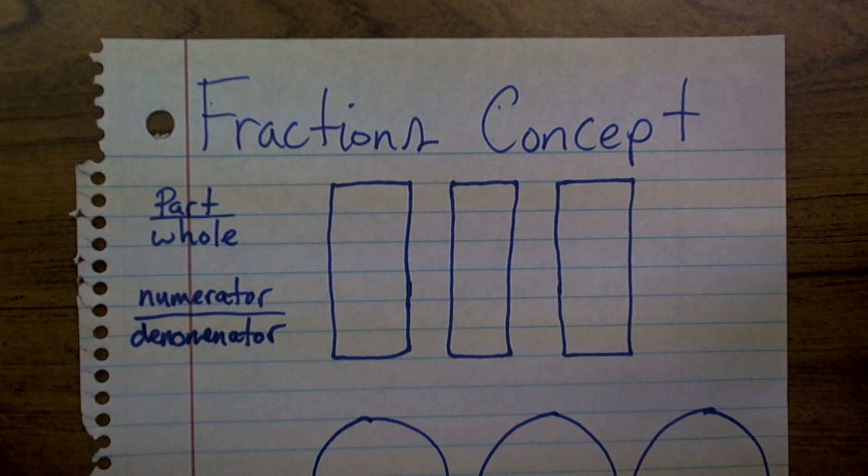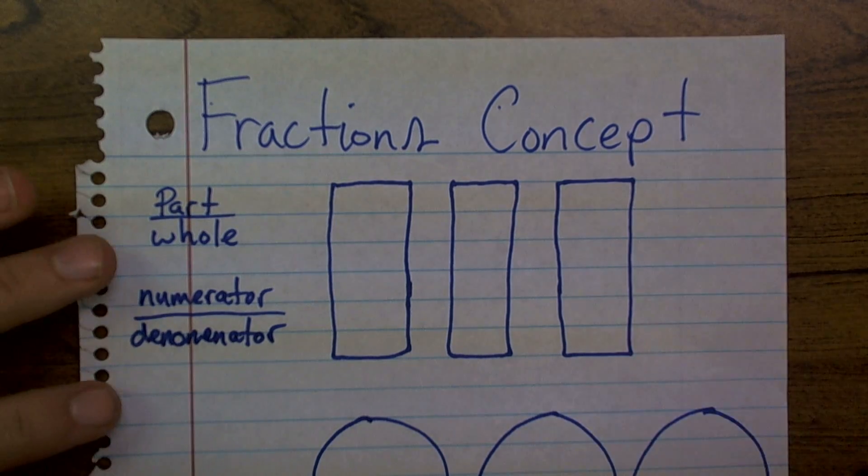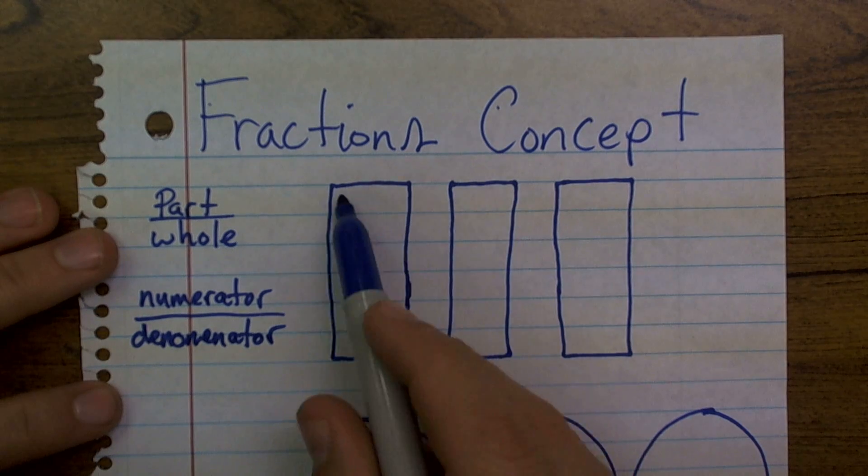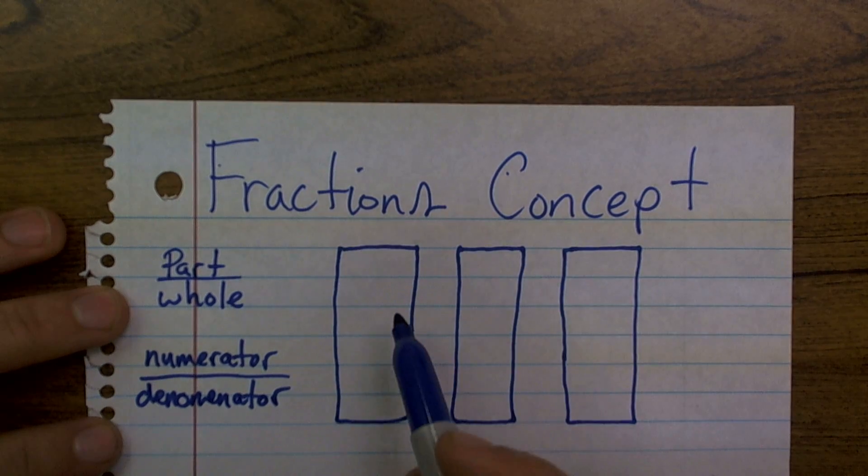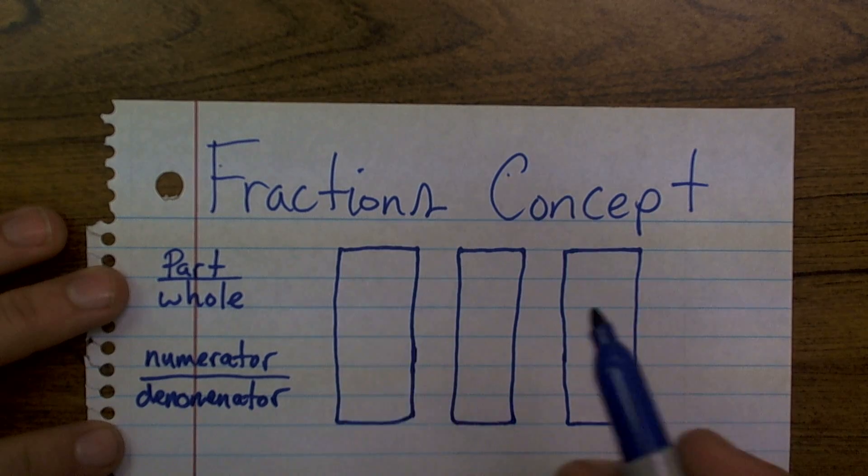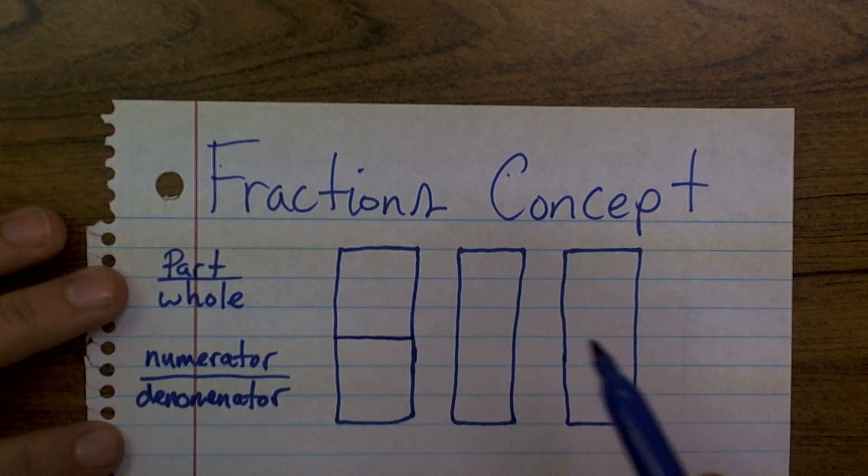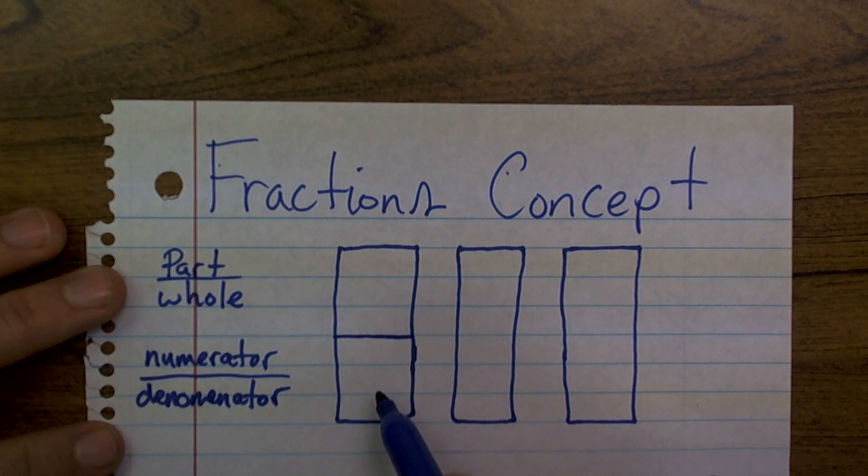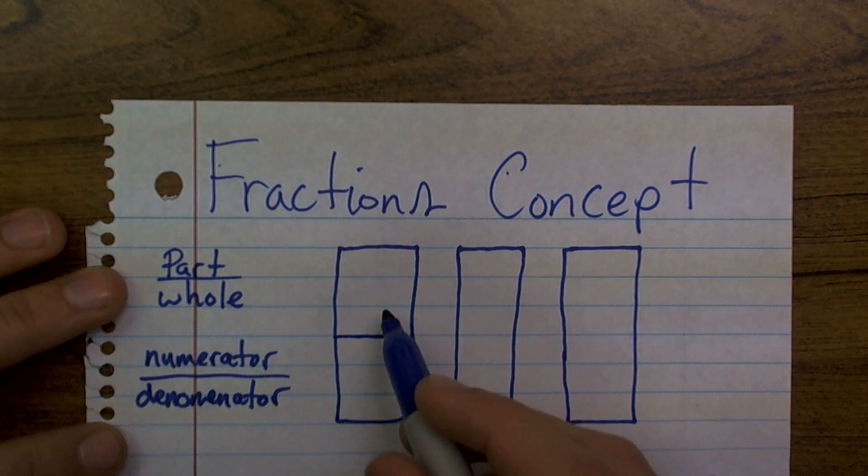Now, the next thing that we need to understand with a fraction is really all a fraction is, is if we take a whole, here I have three bars, all right? And what I'm going to do is I'm going to split these bars into different parts or section them off. So now I'm going to section it off and do two different parts, okay?